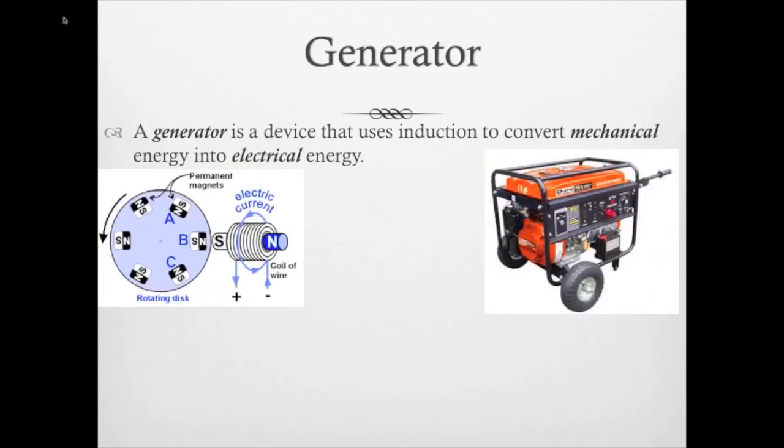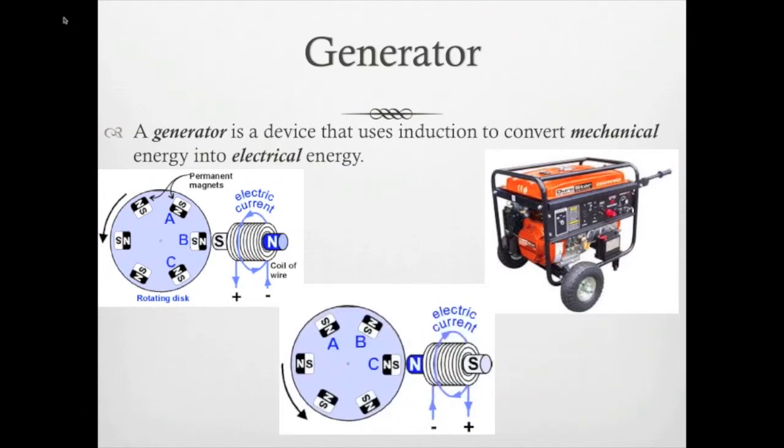Next we have a generator. This is completely opposite of an electric motor. A generator uses induction and it converts mechanical energy into electric energy. That's why you fill your generators with propane or with gasoline or whatever, and then it turns it into electricity. So if your electricity goes out you turn the generator on, and it uses fuel to put electricity to your house. And again you can see the pictures below showing how the electric current and magnets work together.